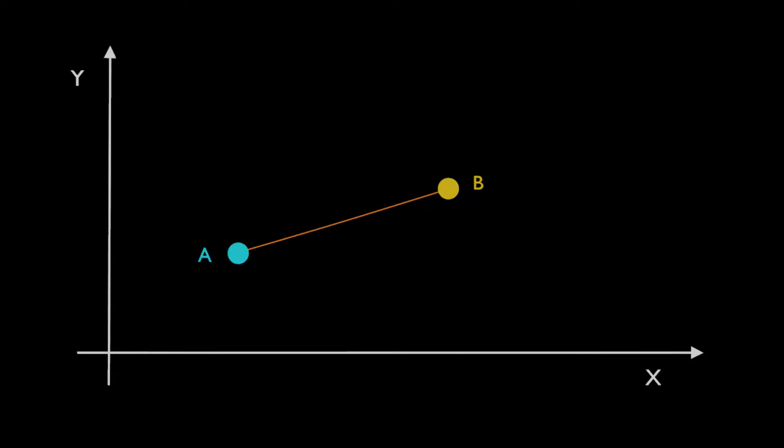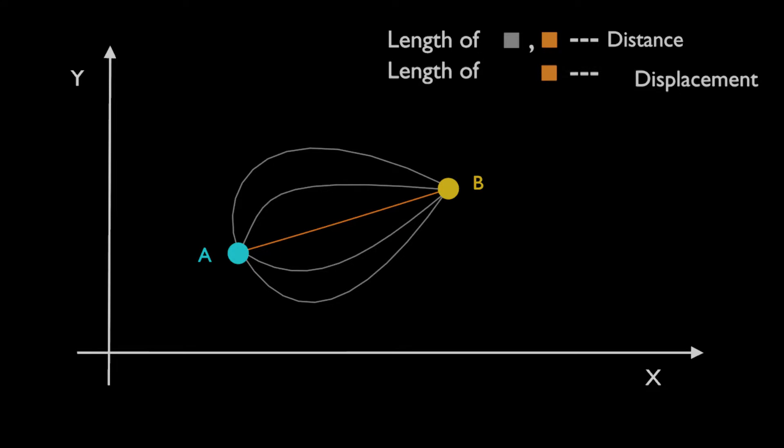The length of that straight line is displacement. Remember, all possible paths can be considered as distances, but the straight one is displacement. Displacement is a vector as it always points towards the destination, no matter which path you took to reach there. Thus it can be represented as an arrow, and the length of the arrow represents the value of the vector.